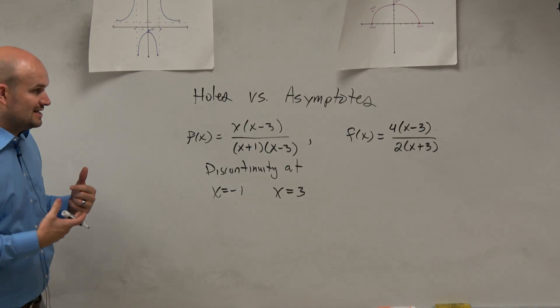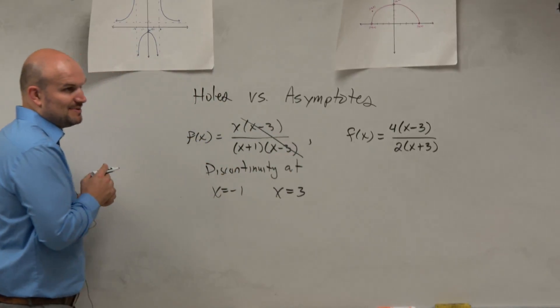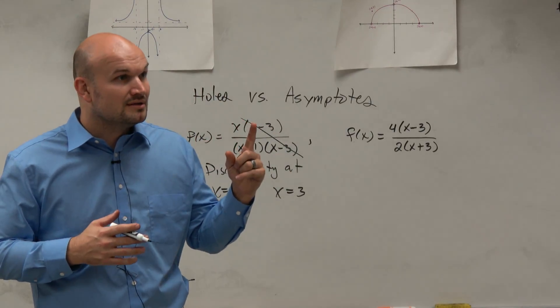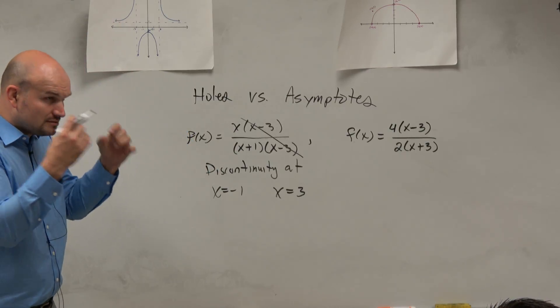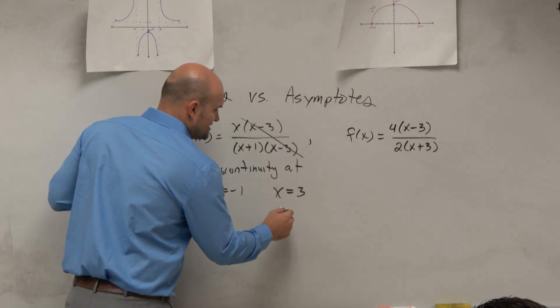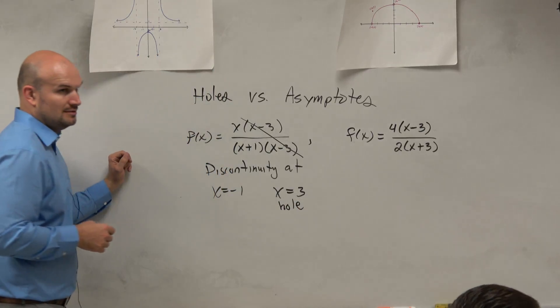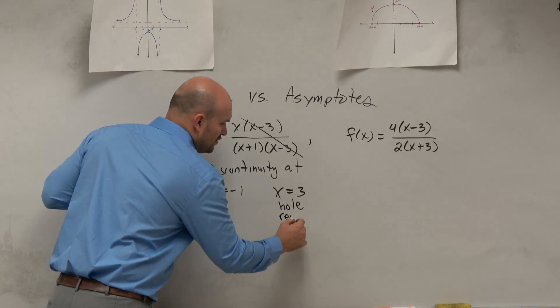So the basic rule is if they divide out, don't you guys agree x minus 3 divided by x minus 3 is 1? So it can be simplified. If they can be divided out, this is what we call a hole, OK? Which, obviously, we know is removable.